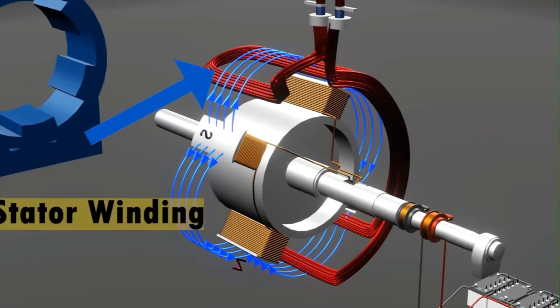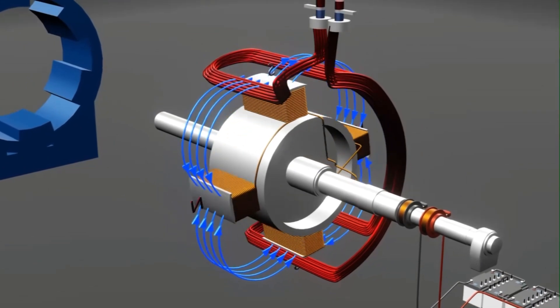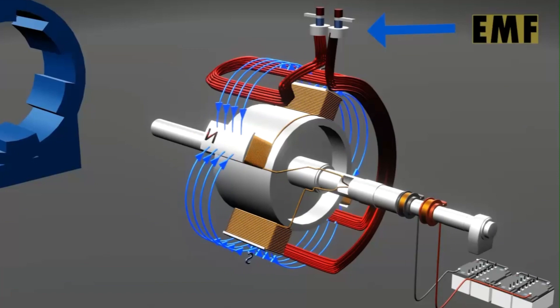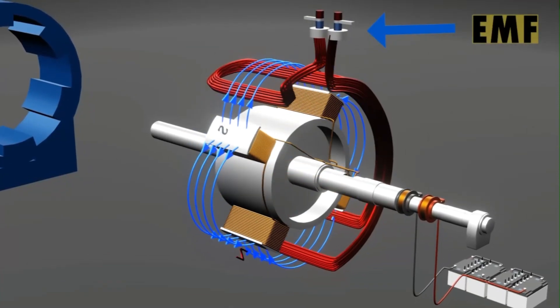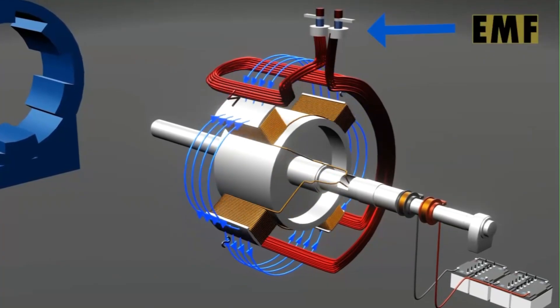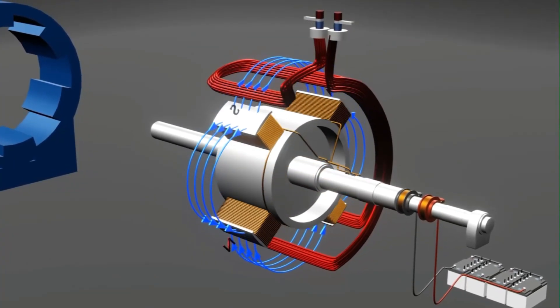Now imagine a magnet and a coil. When the magnet rotates inside the coil, it creates a changing magnetic field. This changing field induces an electromotive force, or voltage, in the coil. This is the heart of a synchronous generator: a rotating magnet inside a stationary coil.